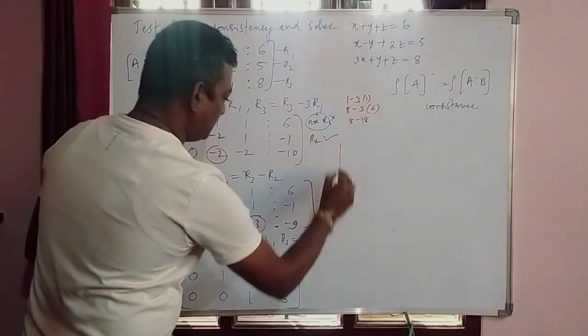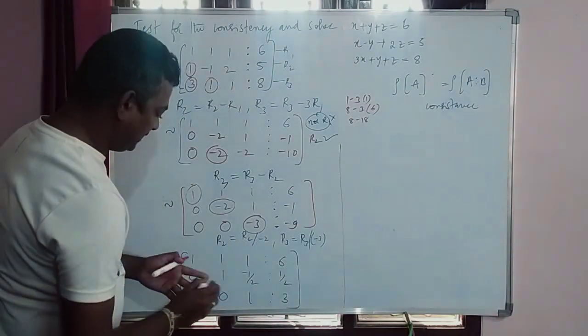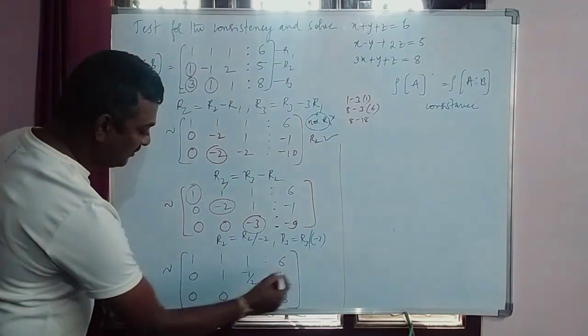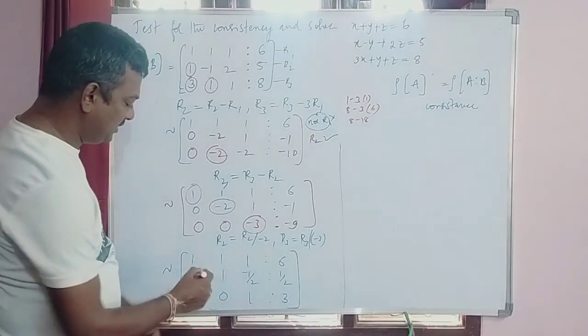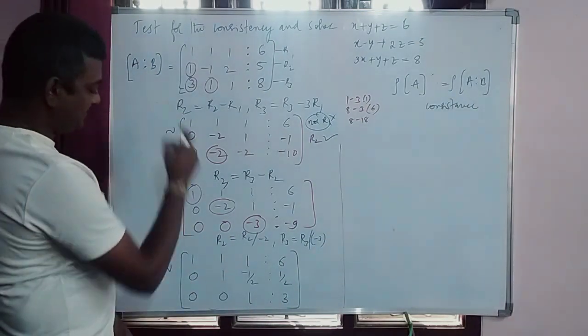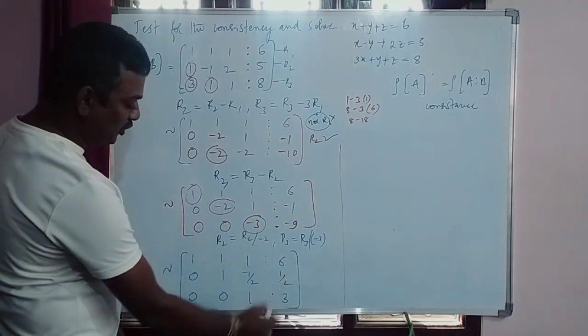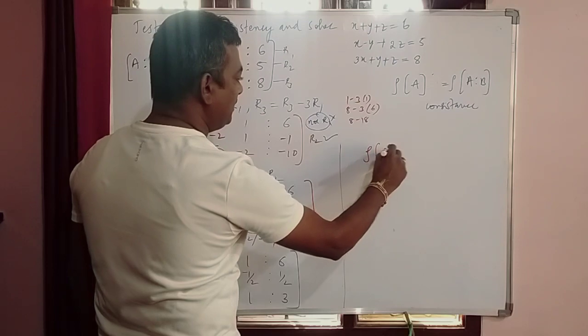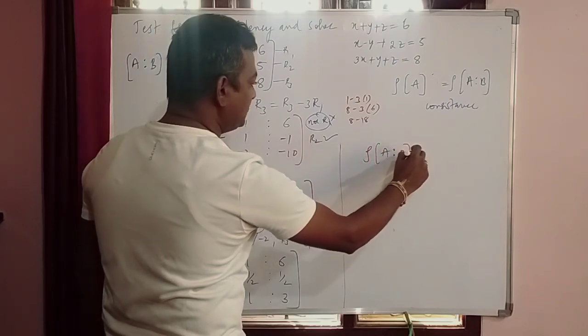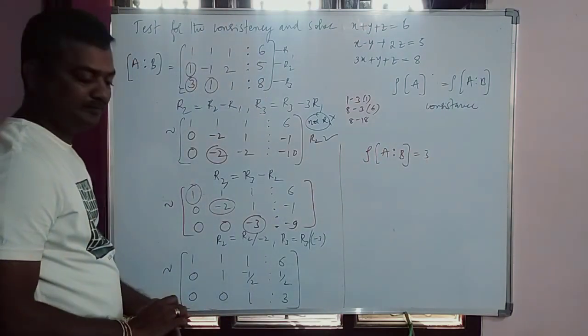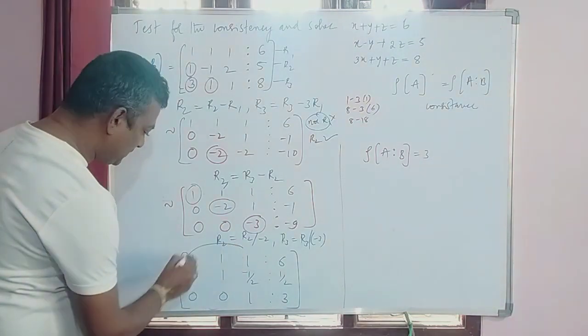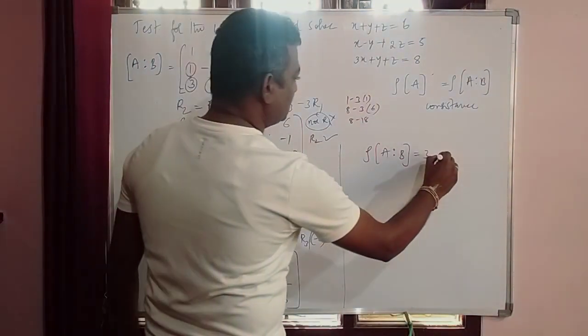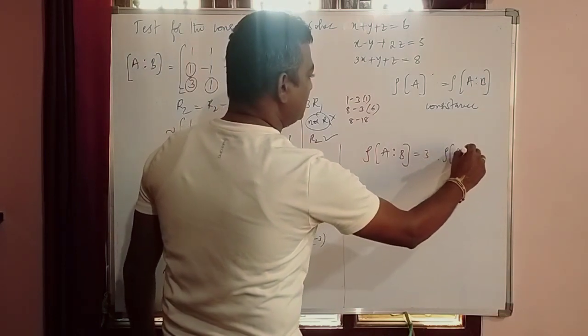Further observe carefully the total matrix. Look at the number of non-zero rows in the augmented matrix. Total 3 rows, 4 columns, so rank of augmented matrix is 3. Observe only matrix A, 3 rows, 3 columns. Here also rank of A is 3.